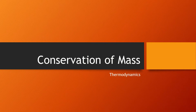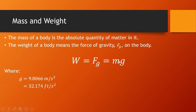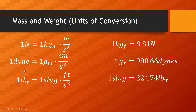Welcome to Thermodynamics. Our first topic will be about the conservation of mass. The mass of a body is the absolute quantity of matter in it, while the weight of a body means the force of gravity, denoted as Fg, on the body. The force of gravity has the formula Fg = m × g, where g is the gravitational acceleration at 9.8066 m/s² or 32.174 ft/s². These are the units of conversion on mass and weight.